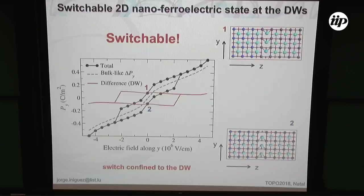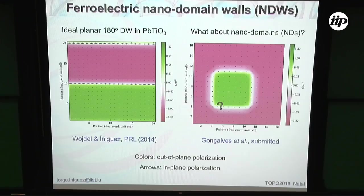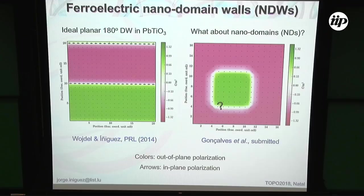That was the first part. Now I'm going to show you how this idea of the Bloch polarization of the domain wall allows us to construct a skyrmium. This is a transition slide. The colors tell you the value of the polarization out of the screen — over here the polarization is negative, over here positive — and the arrows tell you the polarization in-plane. This is a 180-degree domain wall in lead titanate, and this is the domain wall polarization, which is very much confined to the domain wall.